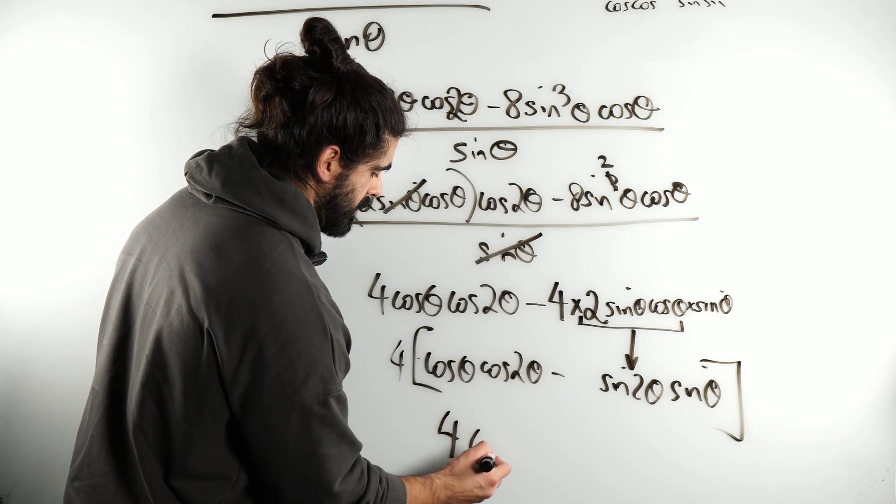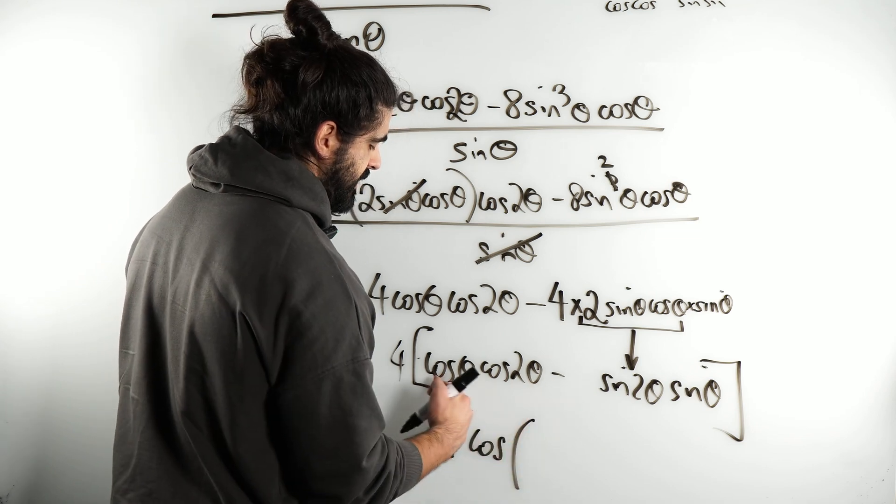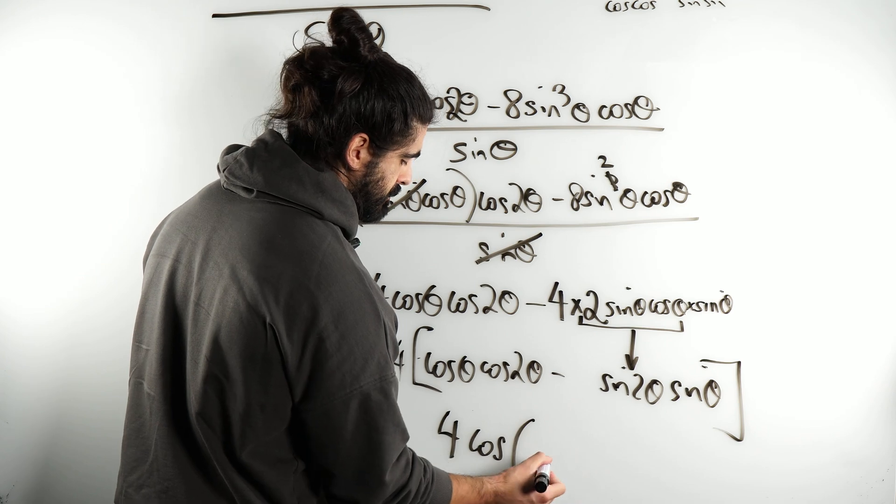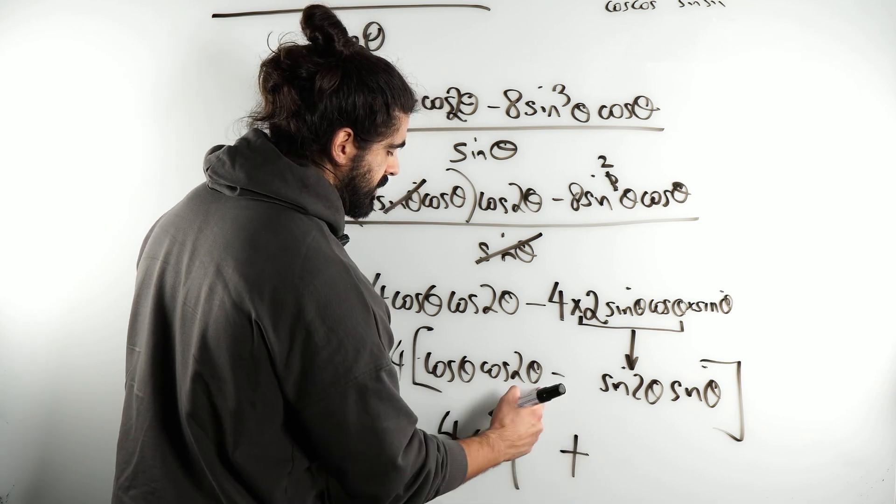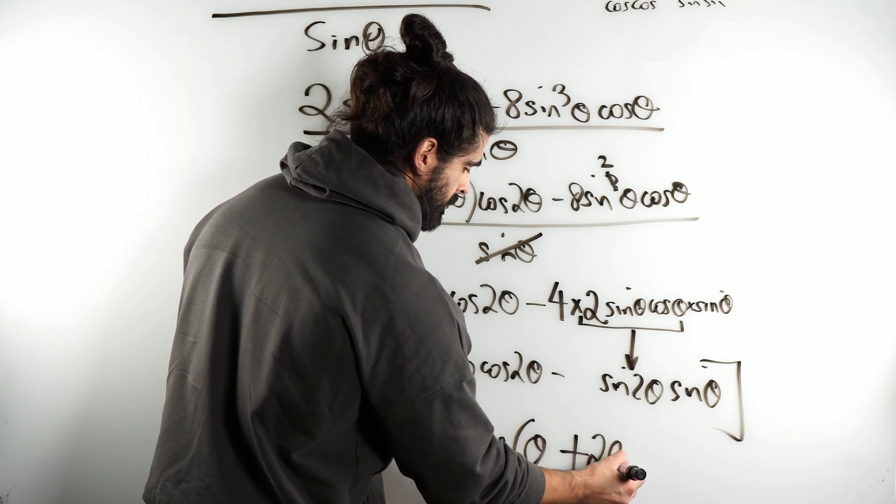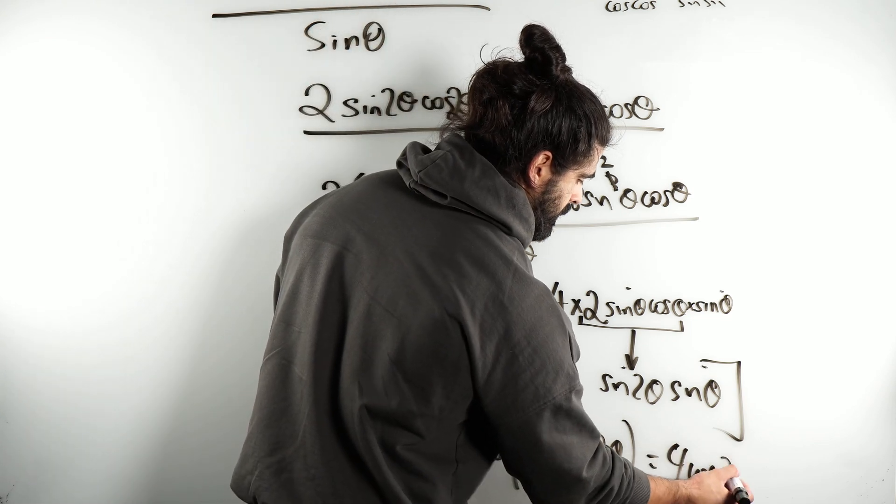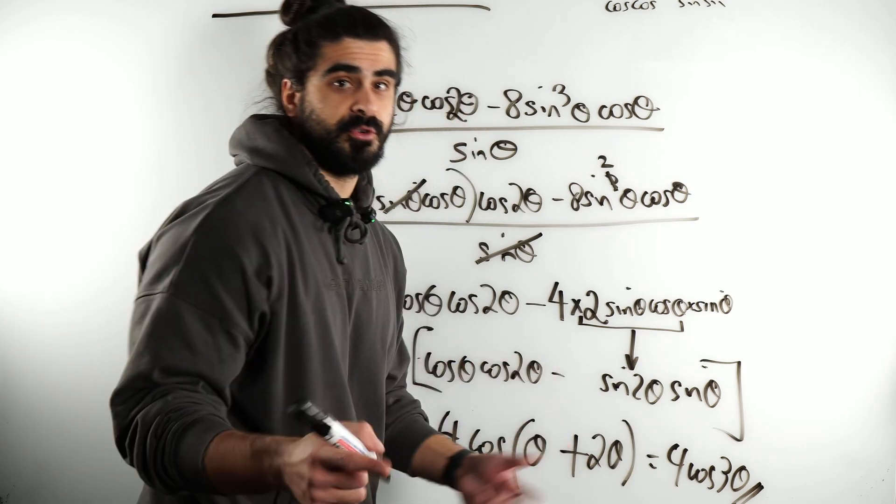And there's your addition rule for cos. So, it becomes 4 cos. Now, remember, the cos addition rule changes the sign. So, it becomes plus. We're adding the two angles, which is 4 cos 3 theta. And that's proved nice.